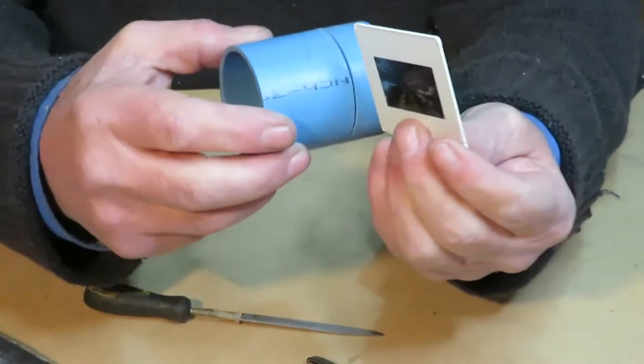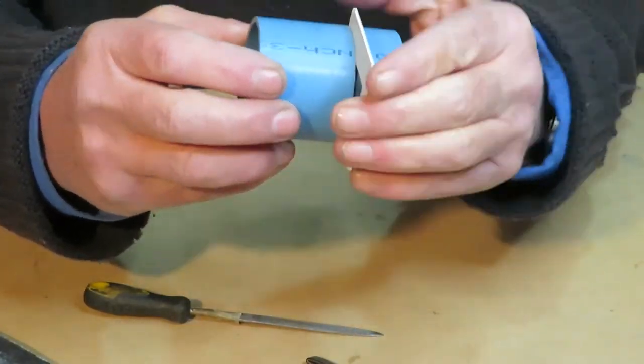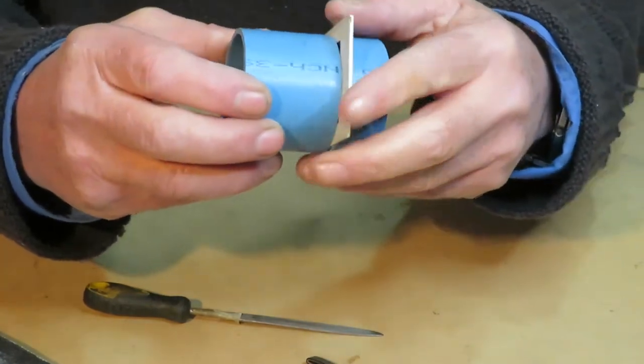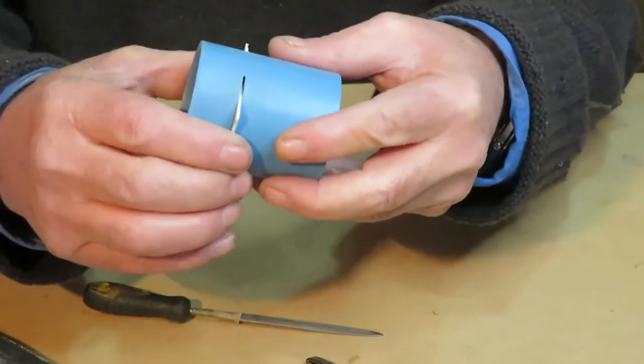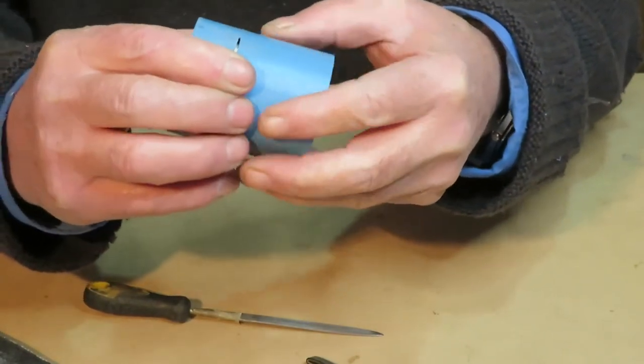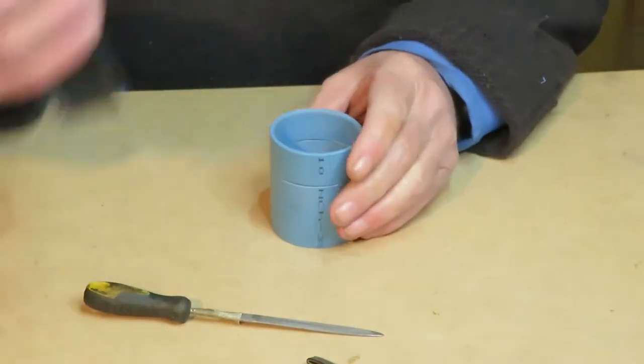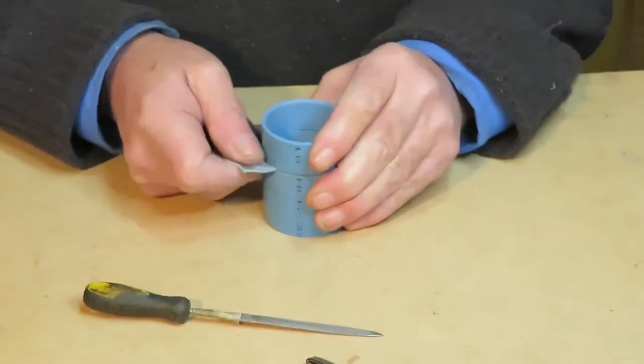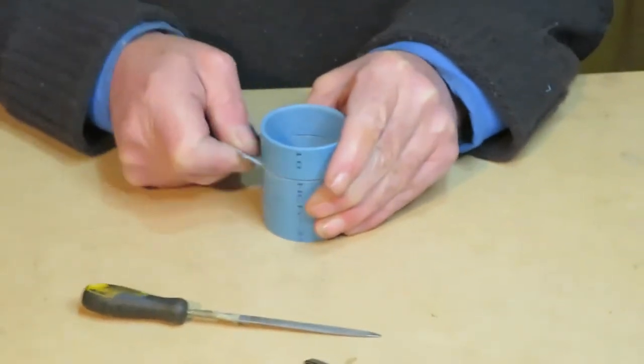The saw blade might not be the precise width, precise size to get your slide completely to the bottom. So you will have to help it out a bit using some sandpaper to make it the right width.